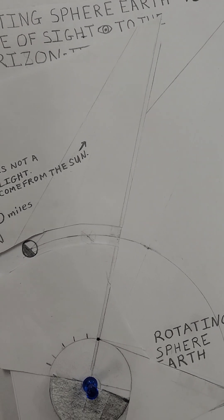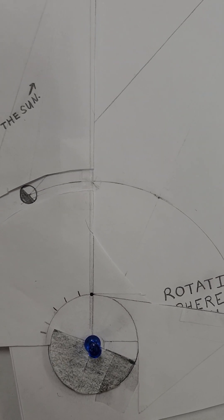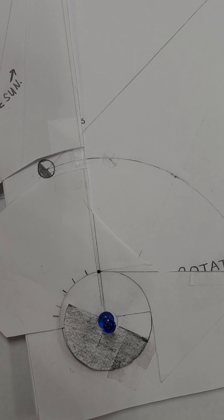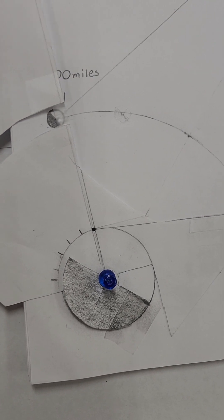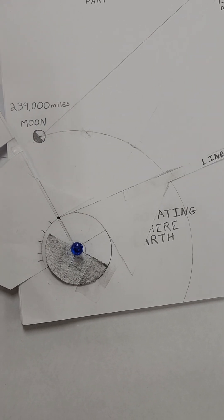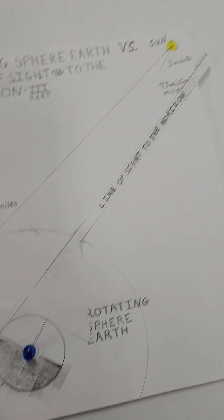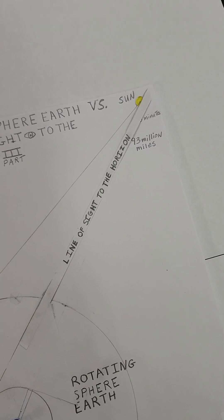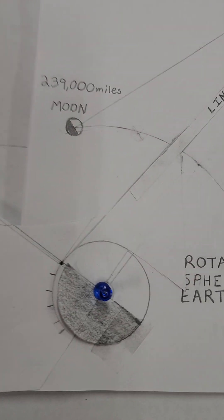As we turn, that moon changes perspective, changes your perspective of it as far as the line of sight is concerned. We get to the end of our line of sight to the sun, but now look where the moon is.